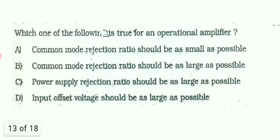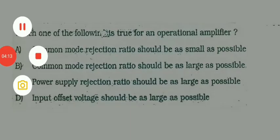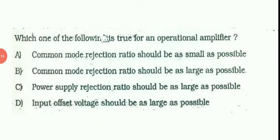Next question: which of the following is true for an operational amplifier? First one: common mode rejection ratio should be small as possible. No, we know that the ideal characteristics of op-amp says that CMRR should be infinity, so it should be wrong answer. Let us see the second one: CMRR should be as large as possible. That seems right answer.